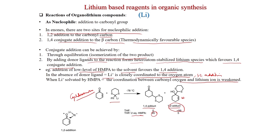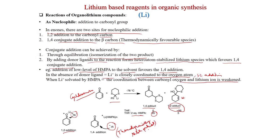The plausible mechanism for 1,2-addition: lithium binds closely to the carbonyl oxygen, and 1,2-attack on the carbonyl carbon is favored. When HMPA is present, HMPA binds lithium and weakens the O-Li bond, leaving the anion uncoordinated, so the thermodynamically stable 1,4-addition product forms. Published in JOC.